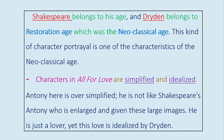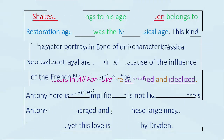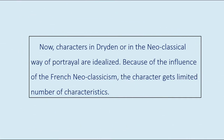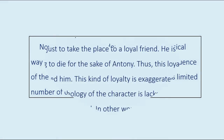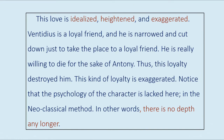Characters in All for Love are simplified and idealized. Antony here is oversimplified — he is not like Shakespeare's Antony who is enlarged and given large images. He is just a lover, yet this love is idealized by Dryden. Characters in Dryden, or in the neoclassical way of portrayal, are idealized. Because of the influence of French neoclassicism, the character gets a limited number of characteristics. This love is idealized, heightened, and exaggerated.